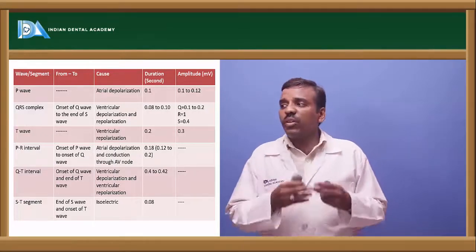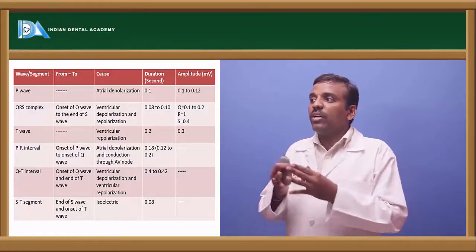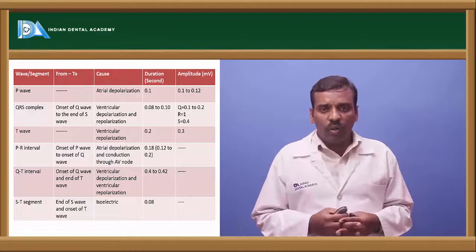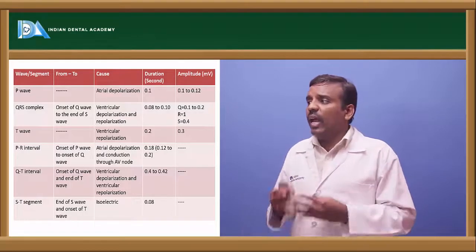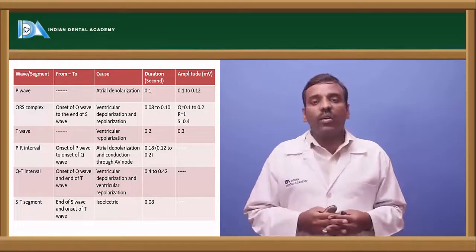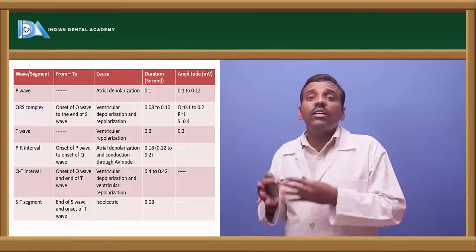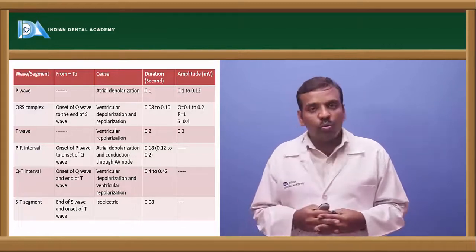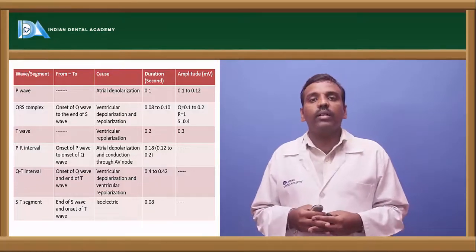The QRS complex spans from the onset of the Q wave to the end of the S wave. Its cause is ventricular depolarization and repolarization. Duration is about 0.08 to 0.10 seconds. The amplitude for Q is about 0.1 to 0.2 mV, for R it is about 1 mV, and for S it is about 0.4 mV.